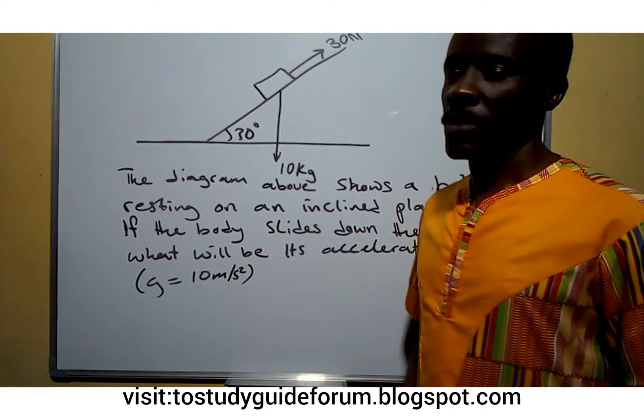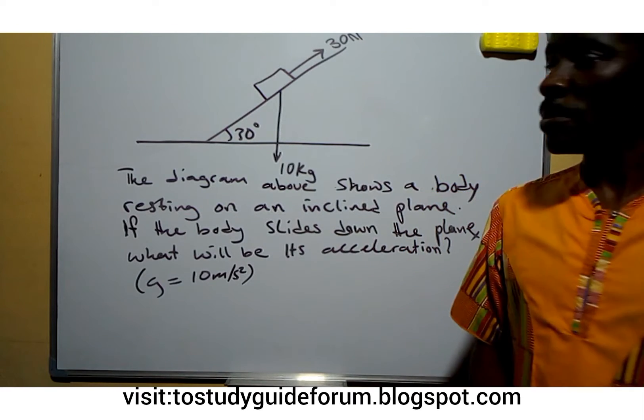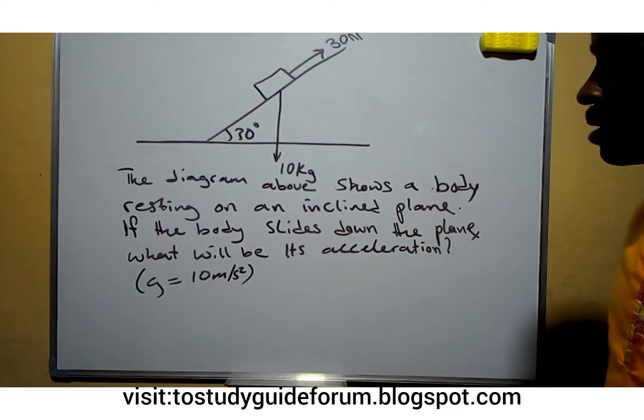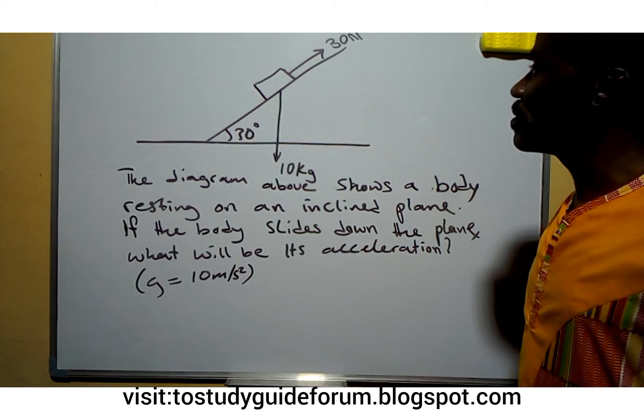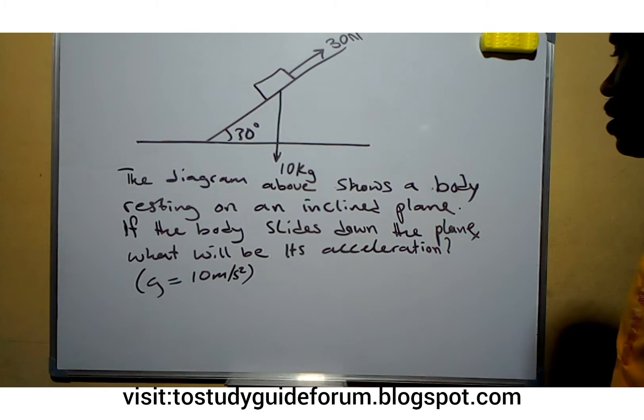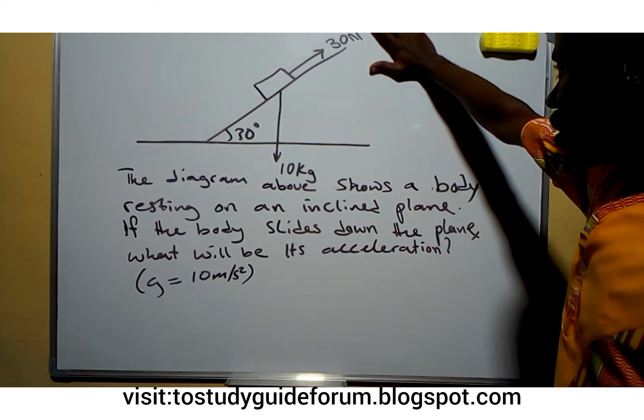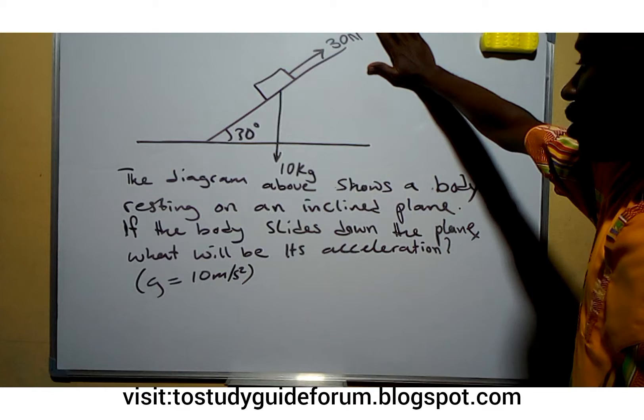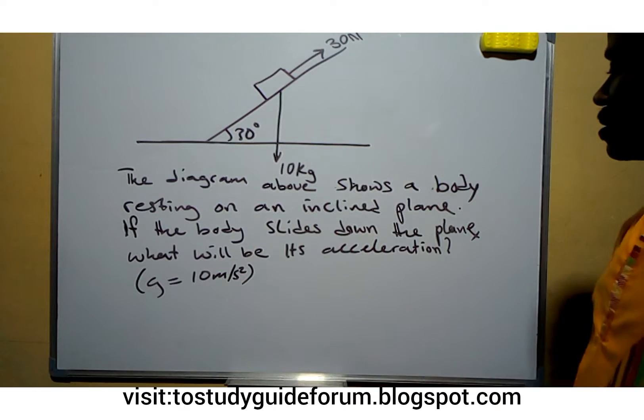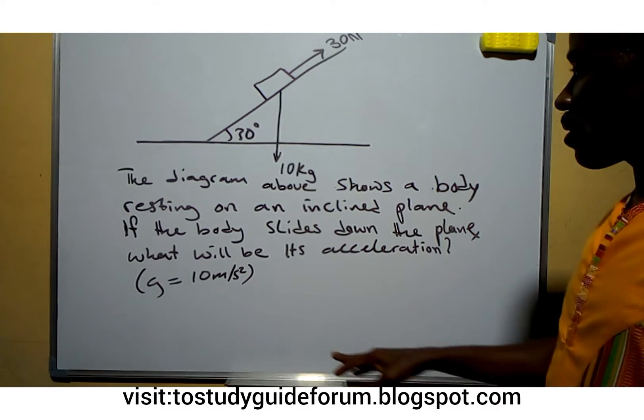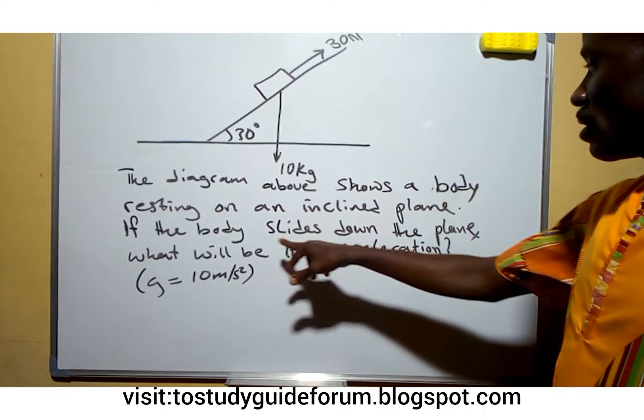Hello everyone, welcome to another exciting time in our class. What we have here is a diagram showing an object, a body resting on an inclined plane. According to the question, if the body slides down the plane, what will be its acceleration?